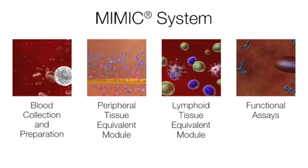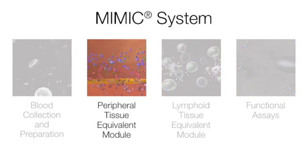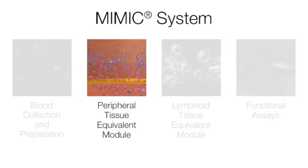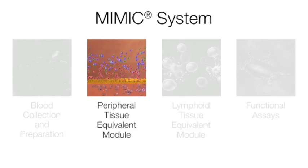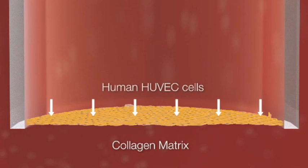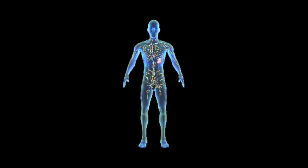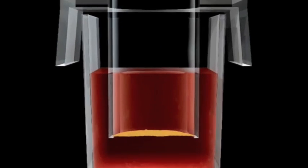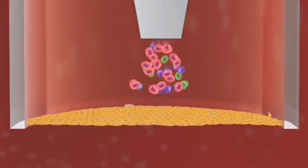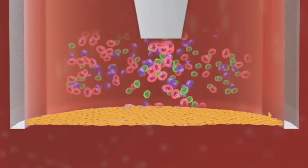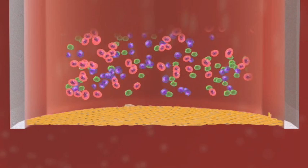The second step in the MIMIC System is the construction of the peripheral tissue equivalent module. This module mimics human skin or peripheral tissue for a representation of innate immune responses. We prepare 96-well plates, seated with a collagen layer covered with a human cell endothelium. Each of the wells is effectively one human test subject. The purified PBMCs or monocytes, generated during blood collection and preparation, are placed on top of this endothelium.